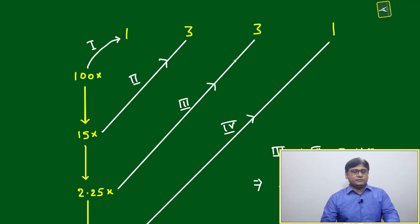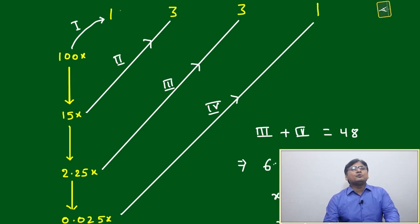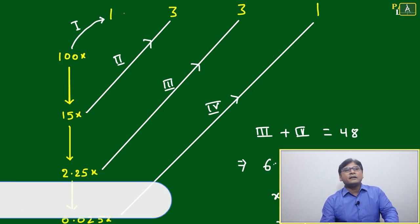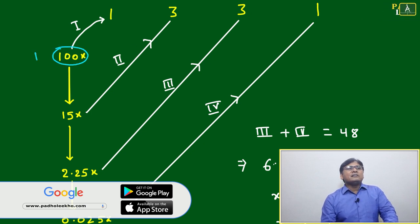Now if n equals 3, as per Pascal's triangle, what we have to do is write the coefficient for the third row: 1, 3, 3, 1. Just take the principal amount as 100x.